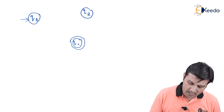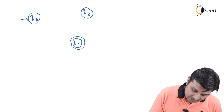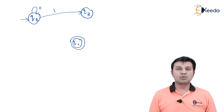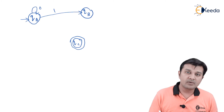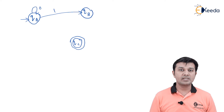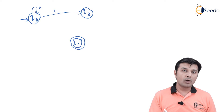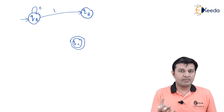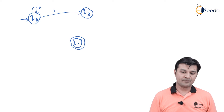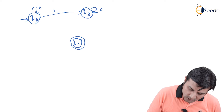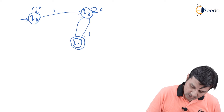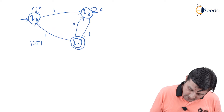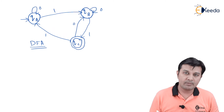In DFA, from each state on each input symbol there is exactly one transition. So QA on 0 goes to QA, and QA on 1 goes to QB. If QA on 0 could go to itself or also to QB, that would be unpredictable — not DFA. Similarly, QB on 0 stays at QB, QB on 1 goes to QC, QC on 0 goes to QB, and QC on 1 goes to QA.